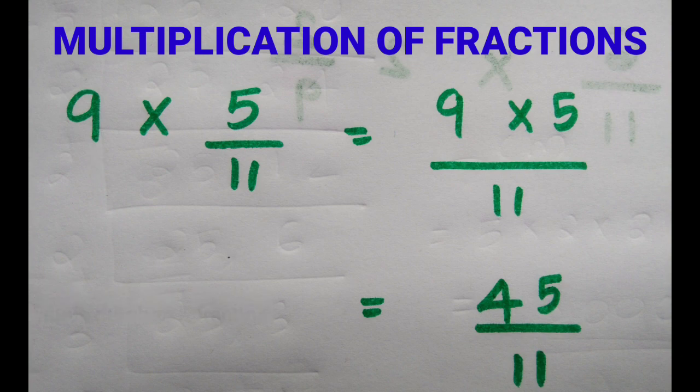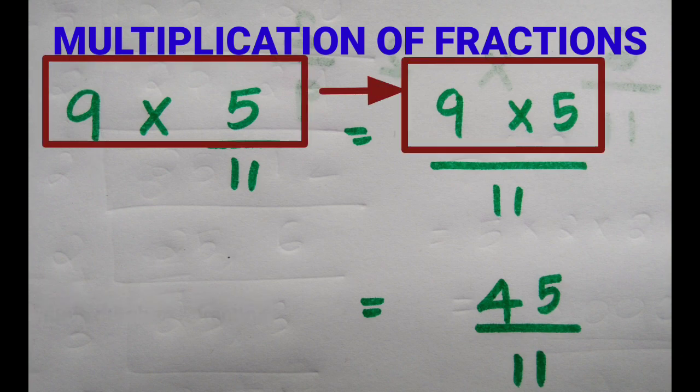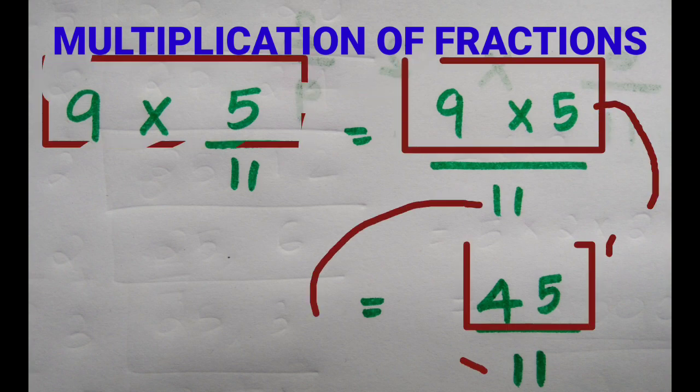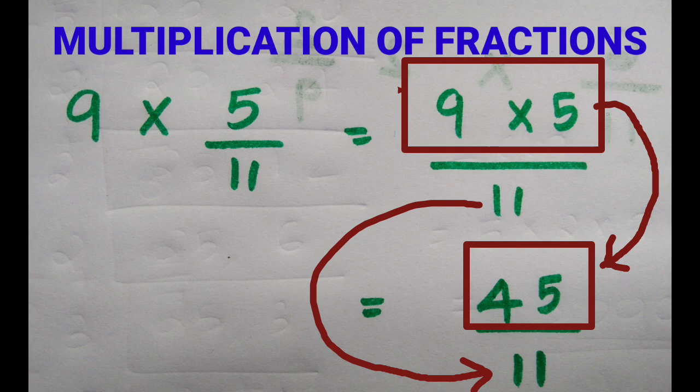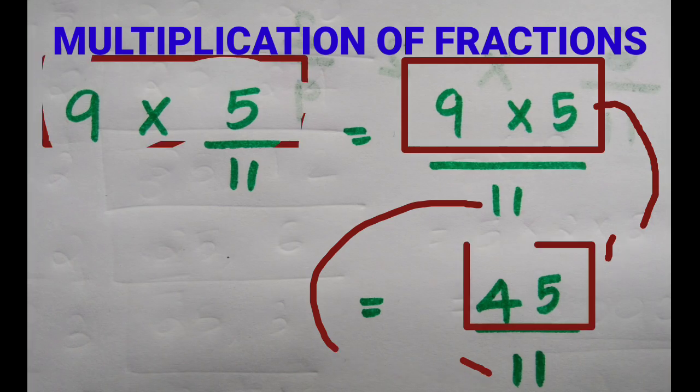Multiply the numerator 9 and 5: 9 multiplied by 5, divided by the same denominator 11. So we get 9 multiplied by 5 is 45, then the same denominator 11. So 45 divided by 11 is the answer.